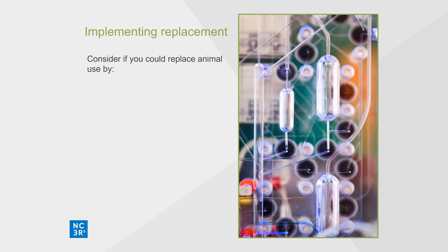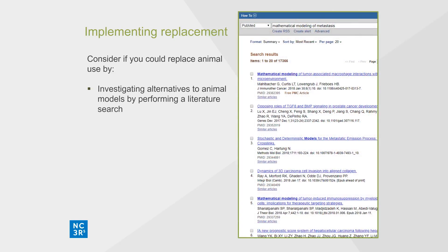Before you begin a research project and as the work progresses, it is important to review whether you can replace some or all of the proposed animal use. A thorough review of the literature is essential. In the past there were relatively limited opportunities for replacement, but recent advances in fields such as stem cell biology, the use of microphysiological systems, and in silico modelling mean that replacement is now much more achievable.